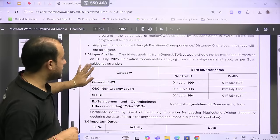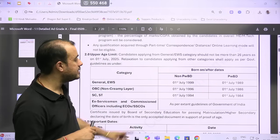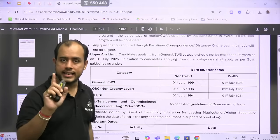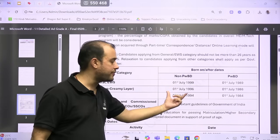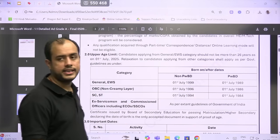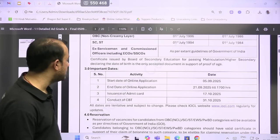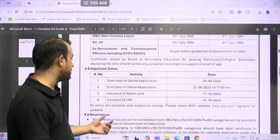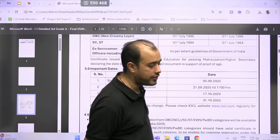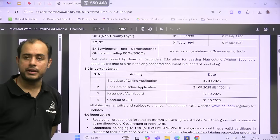Now see, this is the age limit: for general category non-PWBD, born on or after 1st July 1999; for SC/ST 1st July 1994; OBC 1st July 1996. Applications have started from 5th of September and the end date is 21st of September. Admit cards will be issued on 17th October and the exam is being conducted on 31st of October, which means from now almost two months you have in order to prepare for IOCL.